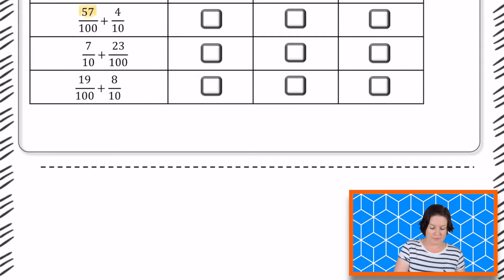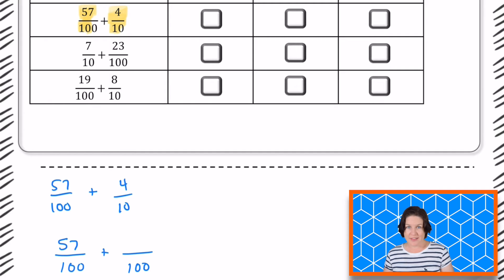So for the first one, I'm seeing 57 hundredths plus 4 tenths. When we add or subtract, our denoms must match. Our denominators must match when we add or subtract fractions. So right now we have hundredths and we have tenths. Those don't match. So we need to make them match. I'm going to bring that down here and say 57 hundredths plus 4 tenths. So we're going to make them match by having them both be hundredths. So we'll keep 57 hundredths, but we do need to change 4 tenths into 40 hundredths.